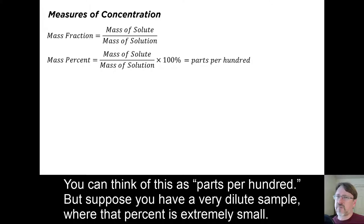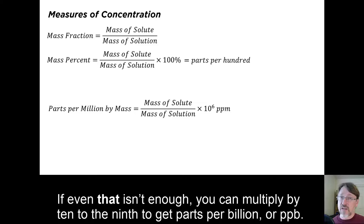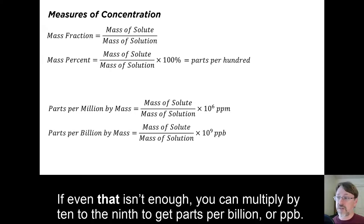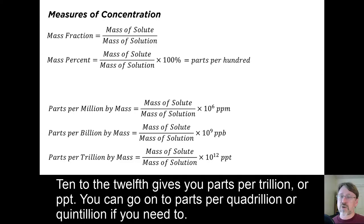But suppose you have a very dilute sample, where the percent is extremely small. Well, you can multiply by 10 to the sixth to get parts per million, or ppm. If even that isn't enough, you can multiply by 10 to the ninth to get parts per billion, or ppb. 10 to the 12th gives you parts per trillion, or ppt. You can go on to parts per quadrillion or quintillion if you need to.